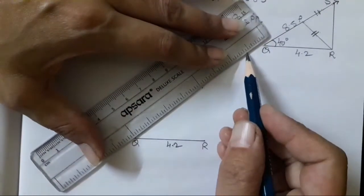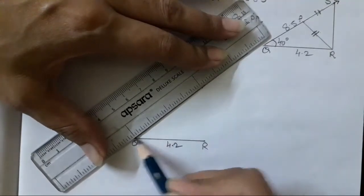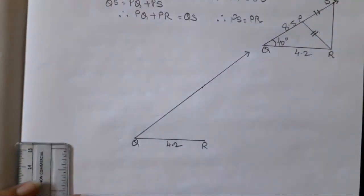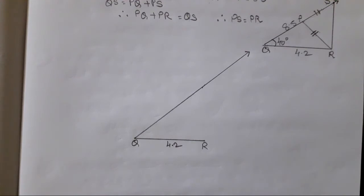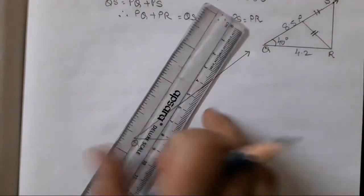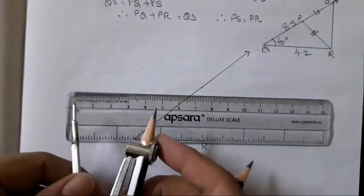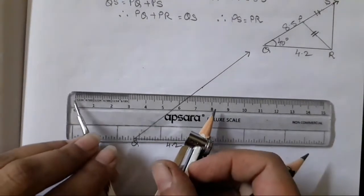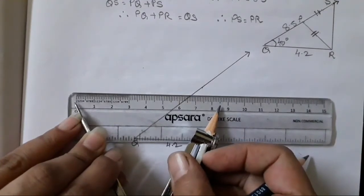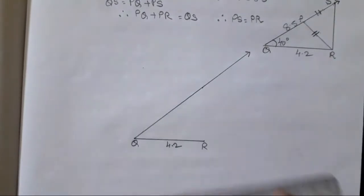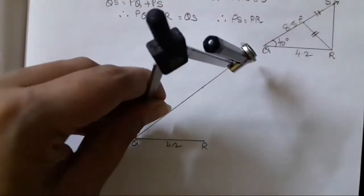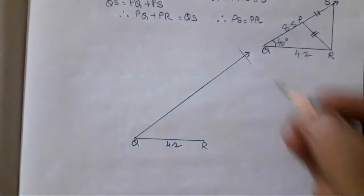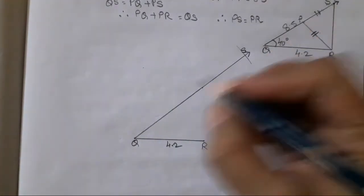Draw a bigger line because we need to mark 8.5 on this line. This is going to mark 8.5. You have to use a scale and a rounder. Take 8.5, which is going to come a little bigger — the line needs to be even bigger. This is going to be my 8.5. This is our S point. This was our 8.5.